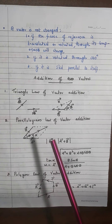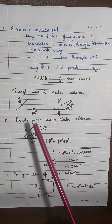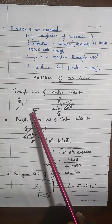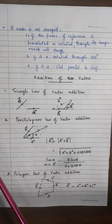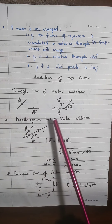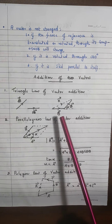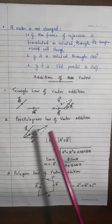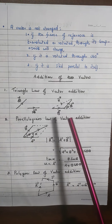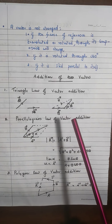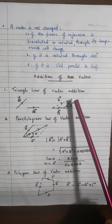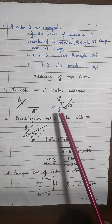The triangle law states: if we have two vectors A and B, we represent them as the first two sides of a triangle in one order — meaning the endpoint of one vector should be the initial point of the other. Then the resultant is the third side drawn in the reverse order.